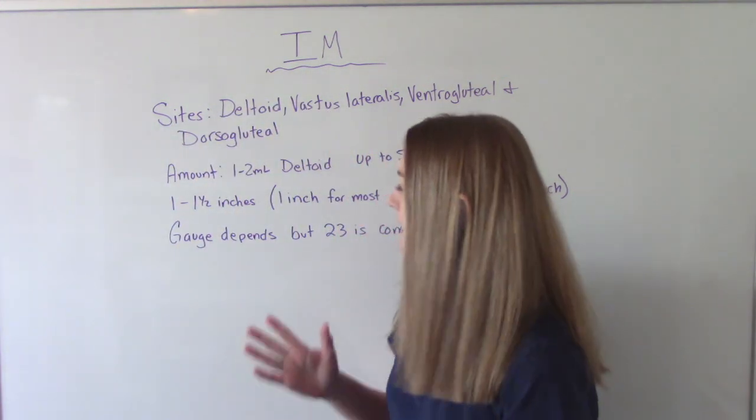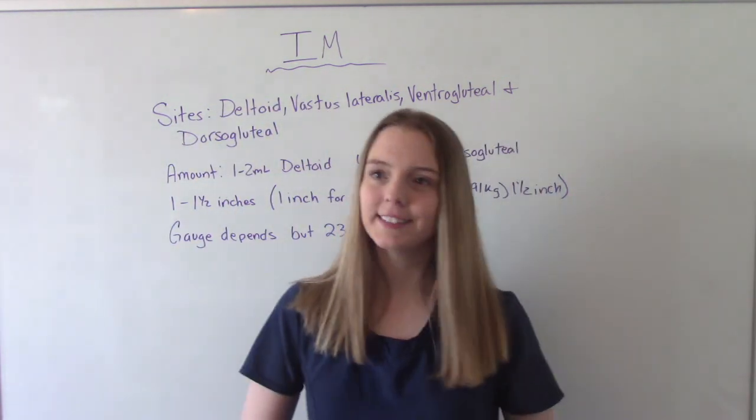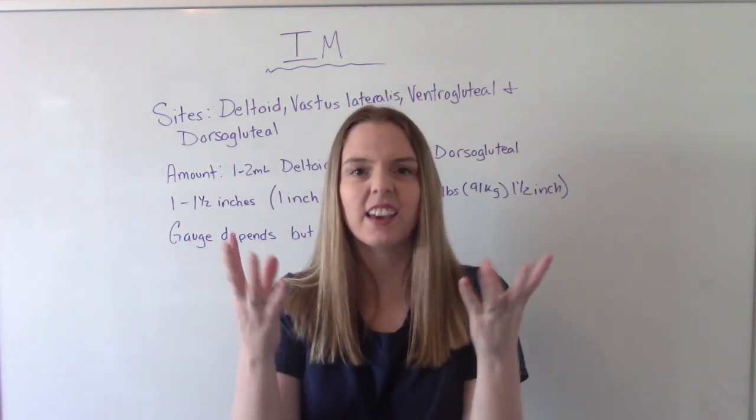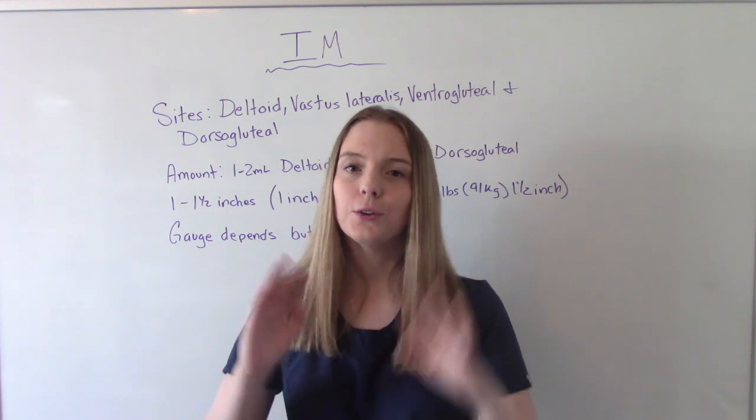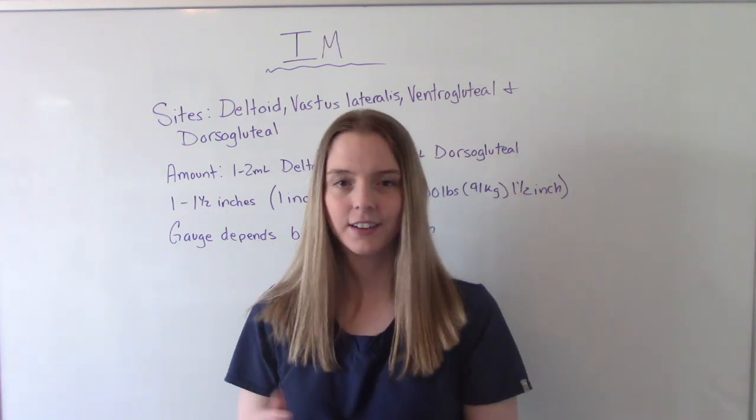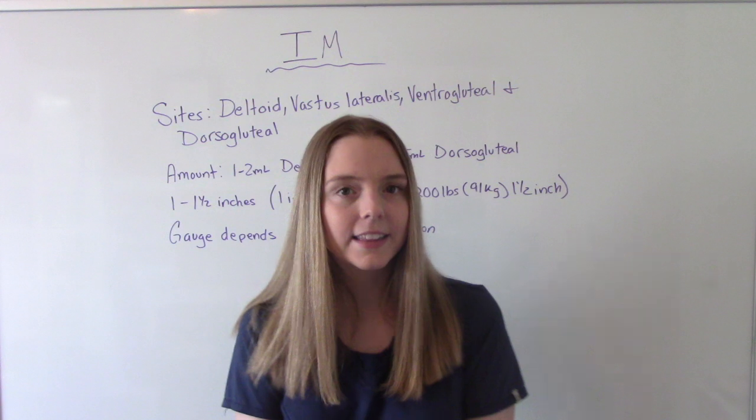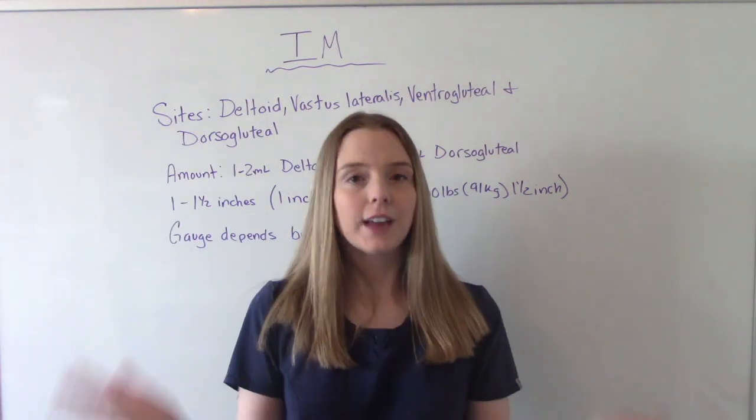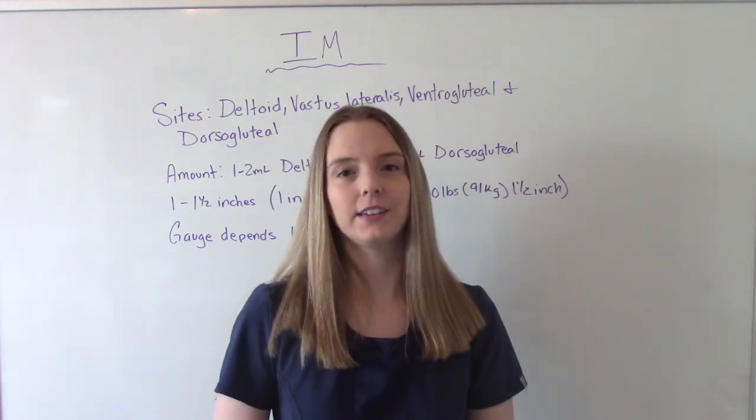When it comes to the gauge, it really depends on the size of your patient and what fluid you're giving, how viscous, how thick it is. You've got to take this stuff into consideration. But the most commonly used gauge is a 23 for an IM injection. So now that we know a little bit more about it, let's actually do it.